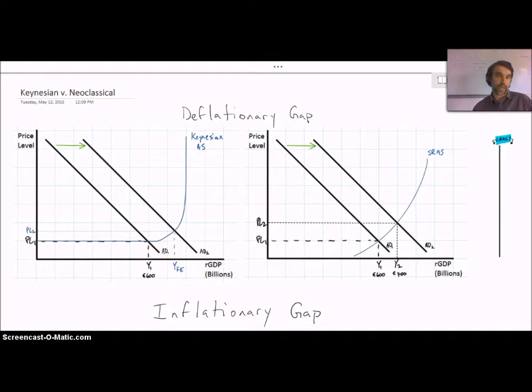Next, we need to look at how fiscal policy works depending on the shape of aggregate supply. Remember, the major argument between Keynesians and neoclassicals is simply that aggregate supply doesn't look like what the other thinks that it does look like. So it's important to see what the effects might be based on how aggregate supply might actually look.